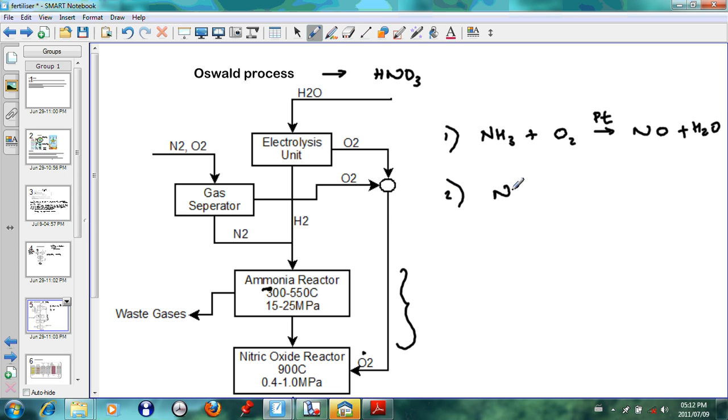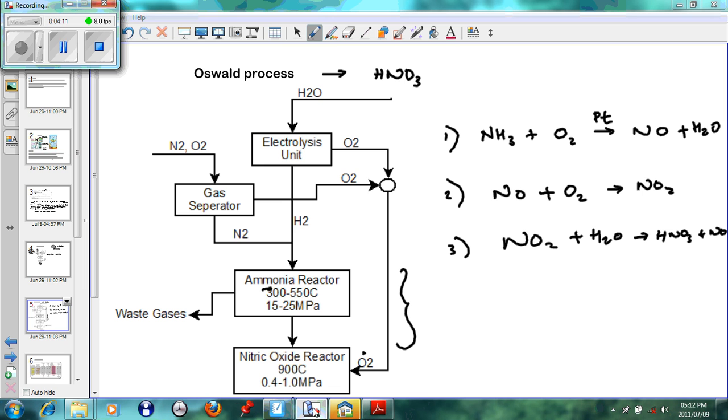the NO that is formed reacts with oxygen to form NO2. And in the third step, the NO2 reacts with water to form HNO3 plus NO. So that is the three reactions that are necessary in terms of the Oswald process.